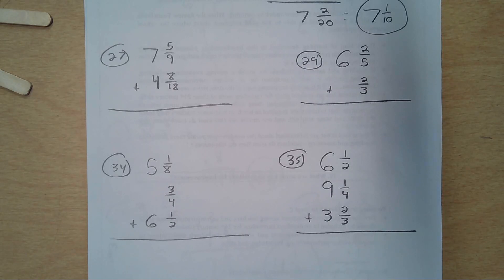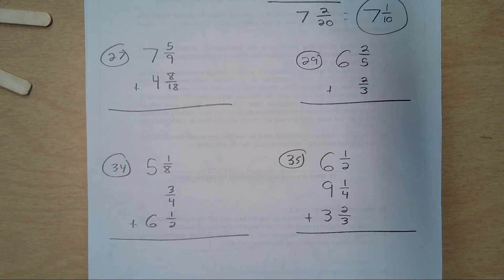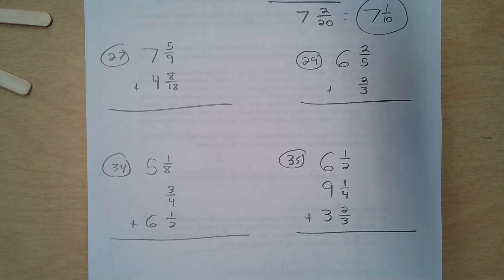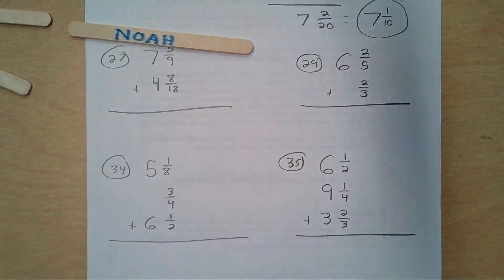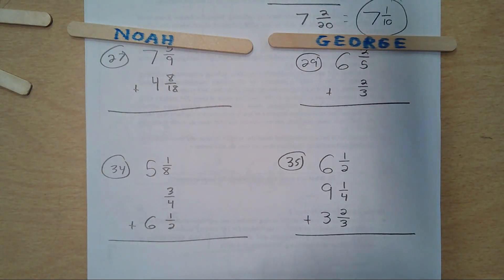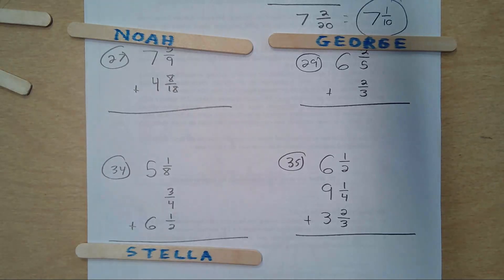These are good. If you can do these four, you're in a rock solid spot. I told you at the beginning this chapter gets a little redundant at times, because we're going to do everything we've done for another five or six lessons with subtracting. Most of us seem to have wrapped it up. So: 27 will be for Noah, 29 will be for George, 34 for Stella, 35 for Uriah.